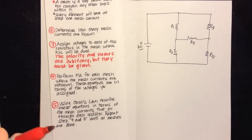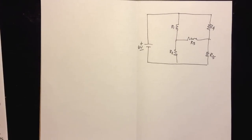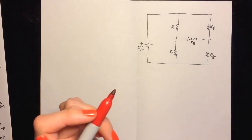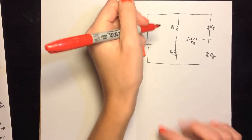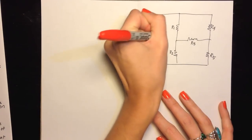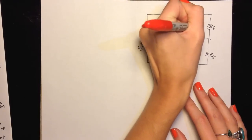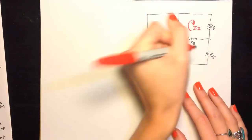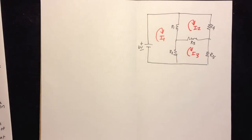So I'm going to show you how to use this method with the circuit that we had in lab last week. Step one: determine how many meshes there are. This circuit has three meshes and we're going to assign a mesh current to each one. So we're going to say this is I1, this is I2, and this is I3.